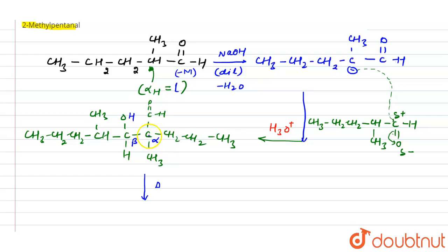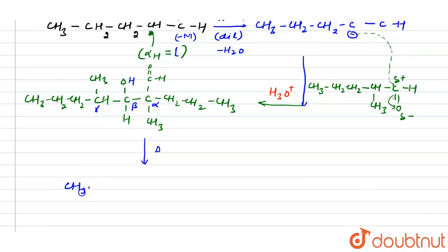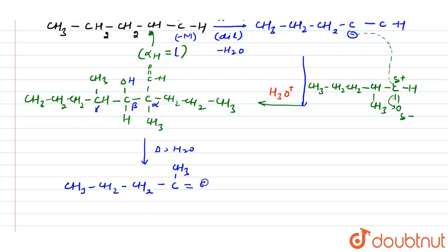The carbon bearing the carbonyl group is the alpha carbon and the next is the beta carbon. On heating, water is normally eliminated from the alpha-beta positions. However, here there is no hydrogen on the alpha carbon, so one hydrogen is instead released from the gamma position. The final heated product is an alpha-beta unsaturated aldehyde: CH3–CH2–CH2–C(=CH–)–CHO, with a three-carbon chain on one side and one carbon on the other.